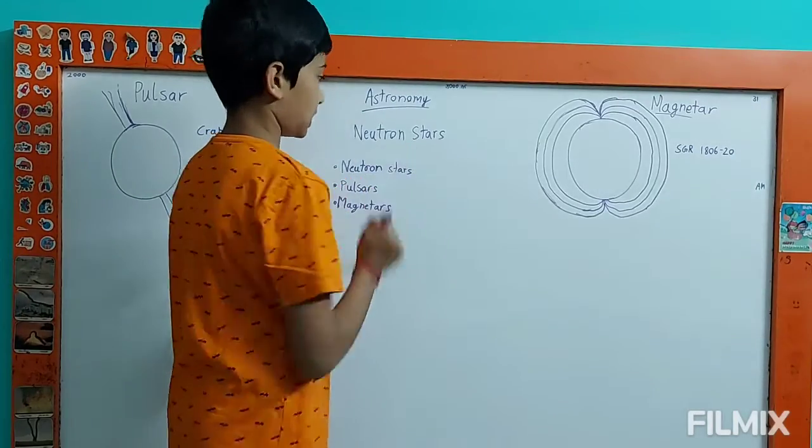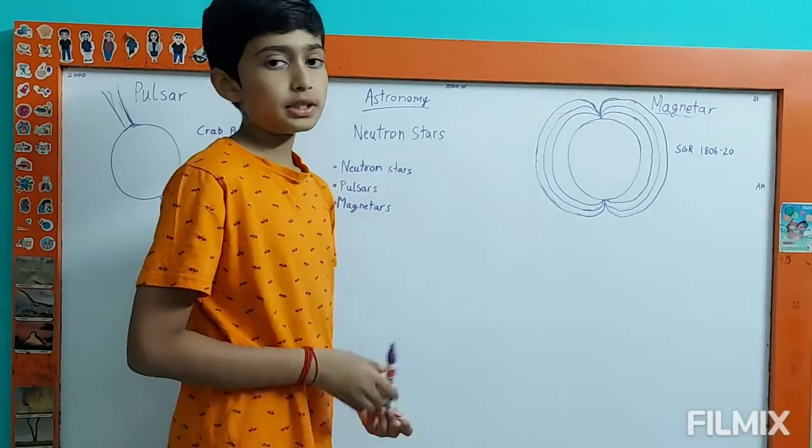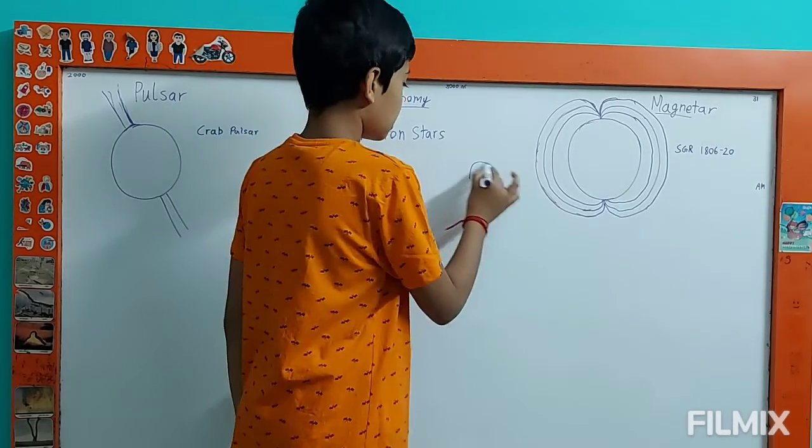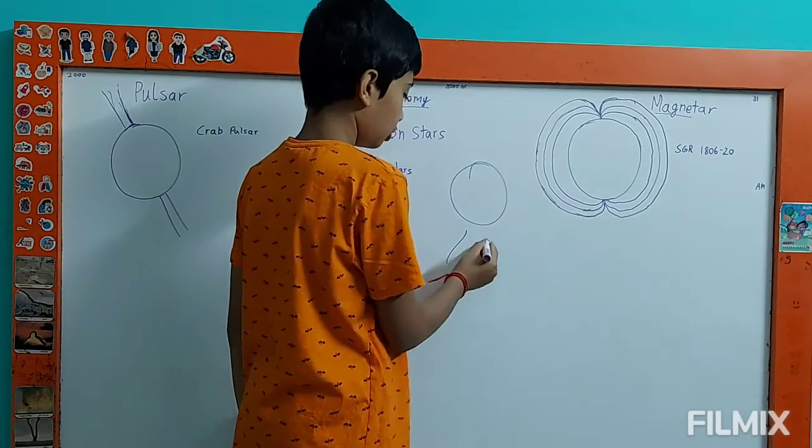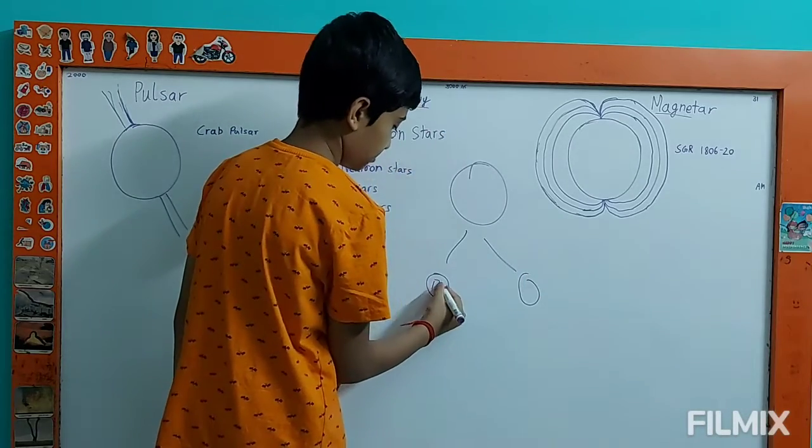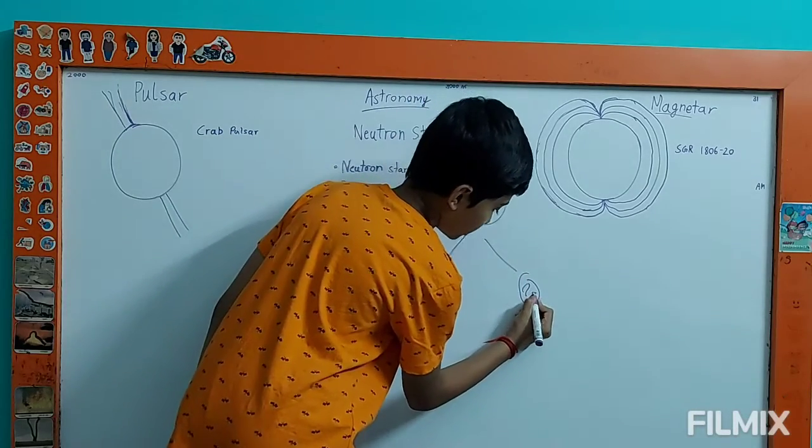We will be learning about neutron stars. What are neutron stars? Neutron stars are the remnants of supernovas. Supernovas result in two possible things: black holes and neutron stars.